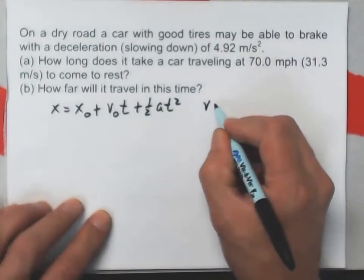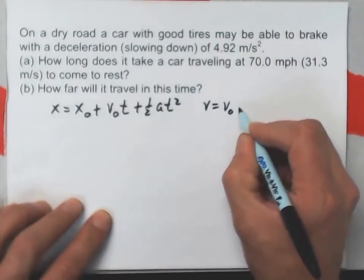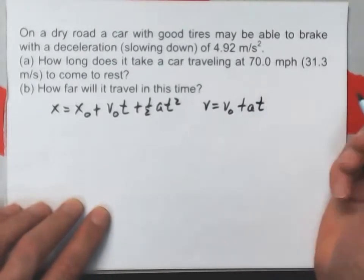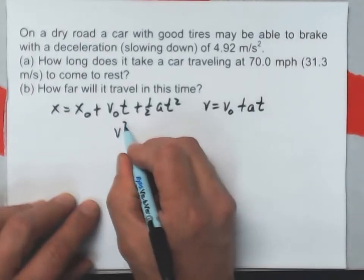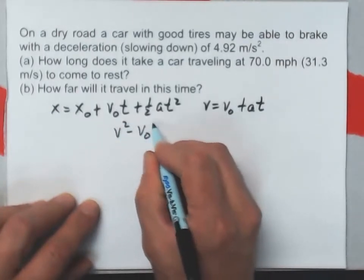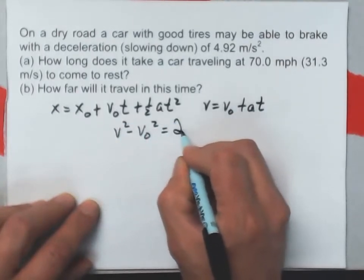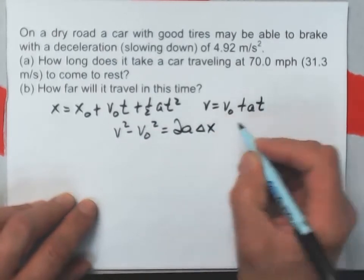I've also got v equals v naught plus a t, and perhaps I will use the equation v squared minus v naught squared is 2a delta x.